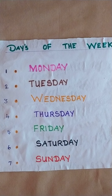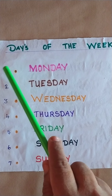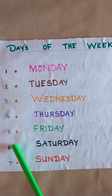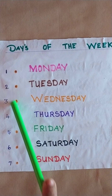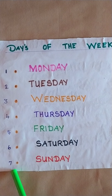How many days are there in a week? There are 7 days in a week.